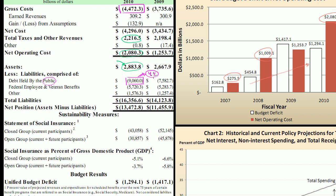That $4 trillion intragovernmental debt is not accounted for here. So you have $9 trillion in publicly held debt, plus another $6 trillion that is seldom talked about — benefits for federal employees and veterans. That gives a total of $16 trillion in liabilities.